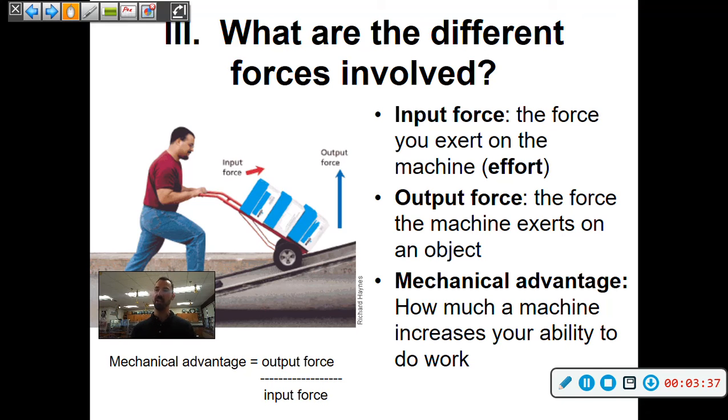Now to tell if a machine is effective, we have something called mechanical advantage. This is how much a machine increases your ability to do work. So basically output force divided by input force is mechanical advantage.